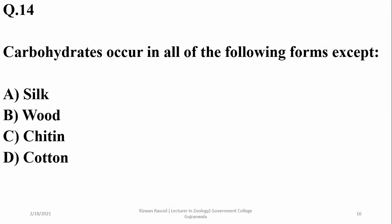Carbohydrates occur in all of the following forms except - carbohydrates occur in wood, chitin or cotton, but silk is a protein form or fibrous protein, so right option is A.